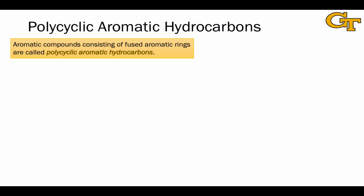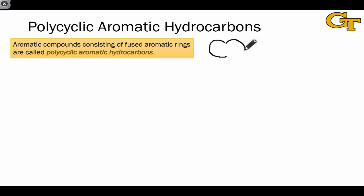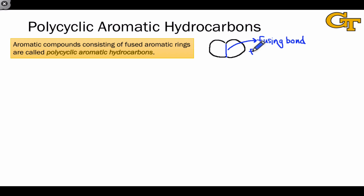Aromatics are not confined to just one ring. Aromatic compounds consisting of fused aromatic rings are called polycyclic aromatic hydrocarbons. When we say fused, we are referring to two rings that are sharing a bond. For example, the blue bond shared by both the ring on the left and the ring on the right is called the fusing bond, and the rings themselves are said to be fused.